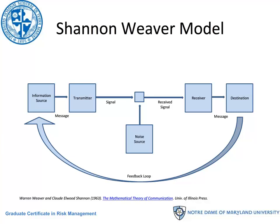The model has an information source that generates a message. That message is transmitted via some sort of signal. There can be noise sources that interfere with the signal so that the received signal may not be faithful to the sent signal. There is a receiver of the message and a destination. In recent years, the feedback loop has been added to this model. Over the course of this video, we'll take apart the pieces of this model to understand the difficulty of communication, and then understand how stress and crisis enhances that difficulty.